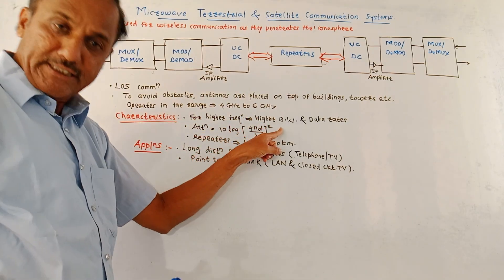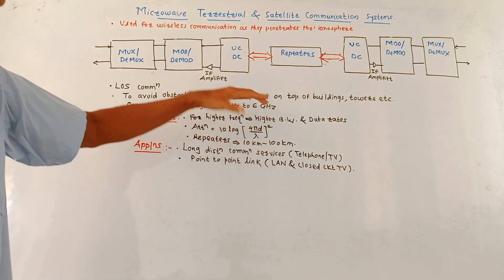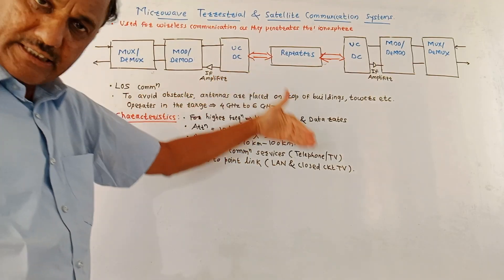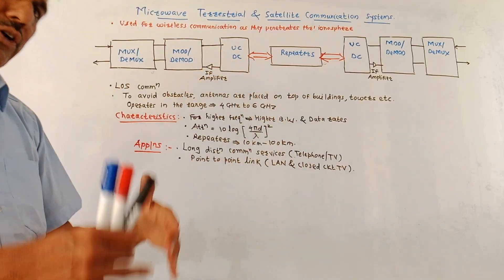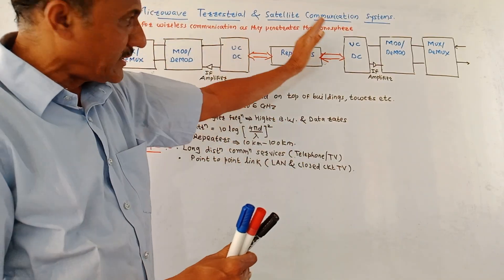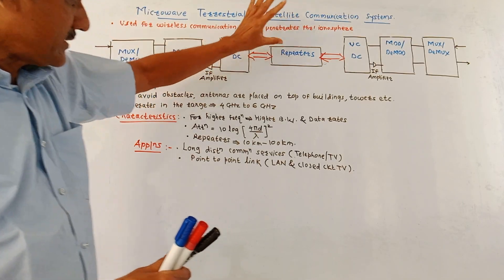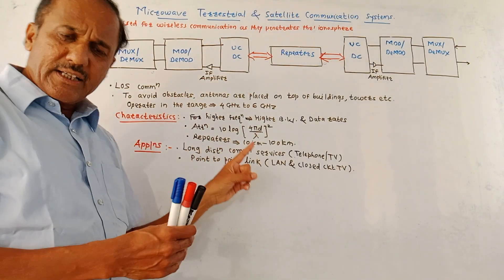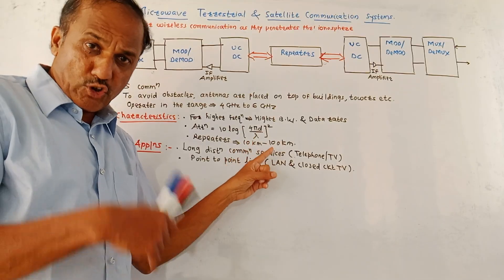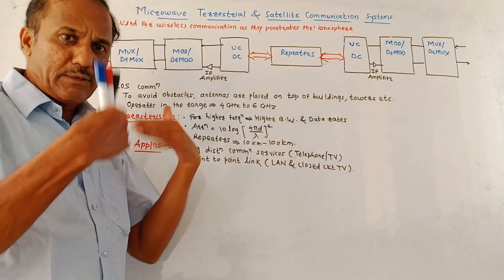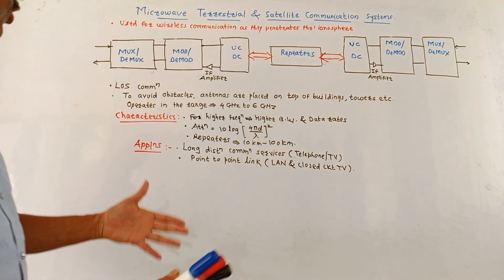As the distance increases, attenuation will go on increasing. That is why we need to place repeaters after a certain distance, as shown in the block diagram. Usually, repeaters are placed around every 10 to 100 kilometers, depending on the type of signal and type of application.